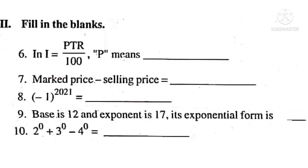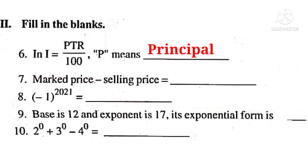Now let us take Roman number 2: Fill in the blanks. Number 6: In I = PTR/100, P means principal. Number 7: Marked price minus selling price is equal to discount.